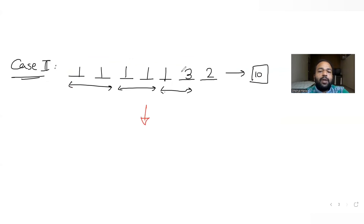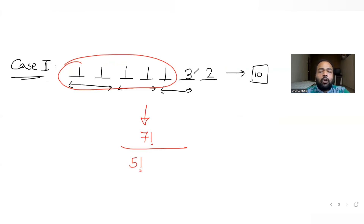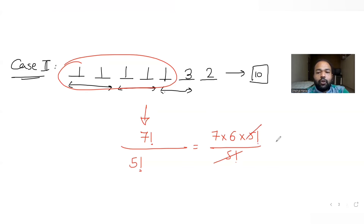For case two — five ones, one two, and one three — seven numbers can be placed into seven blanks in seven factorial ways. Only one is repeated, and it repeats five times; two and three are not repeated. So the count is 7! / 5! = 7 × 6 = 42. So 42 seven-digit integers can be formed in case two.